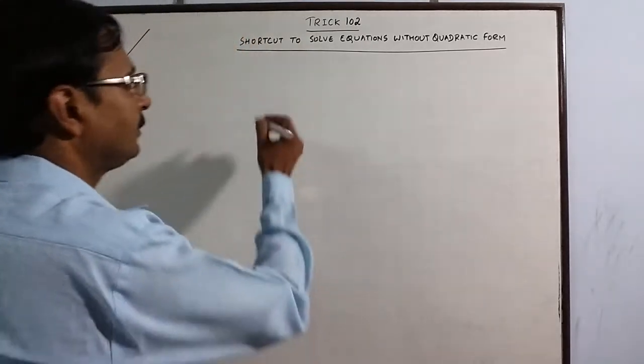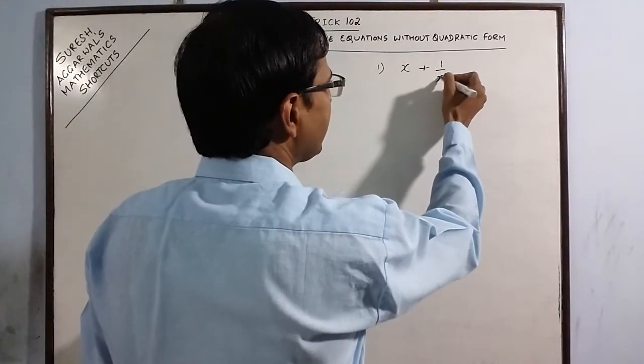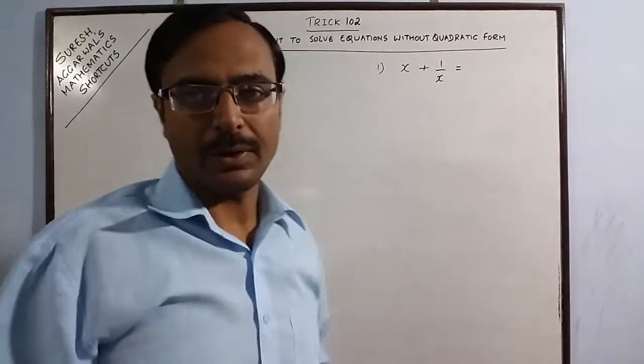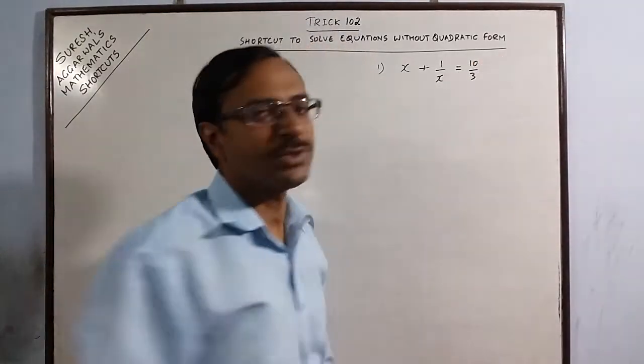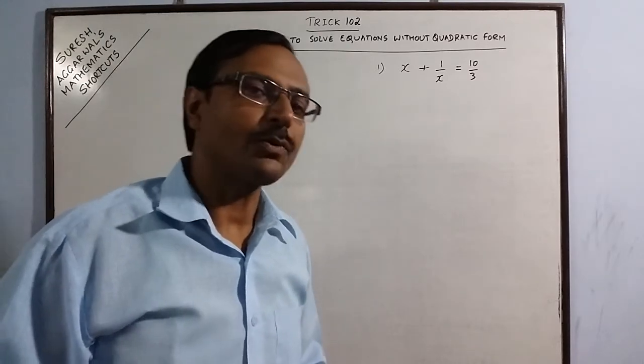Now I am taking one example. See, suppose we have a special type of equation in which one number and its reciprocal, the sum is given. Say we are given the sum as 10 upon 3. This is a very common question at class 10th level where the students have the chapter of quadratic equations.